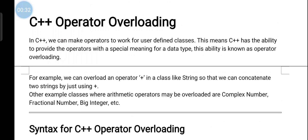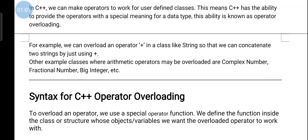We can make operators work for user-defined classes. C++ has the ability to provide operators with special meaning for a data type. For example, we can overload the plus operator in a class like string so that we can concatenate two strings by just using the plus symbol. This means we can use arithmetic operations on strings as well.